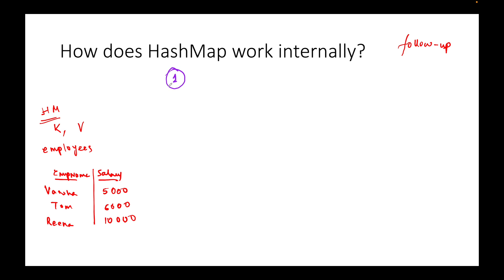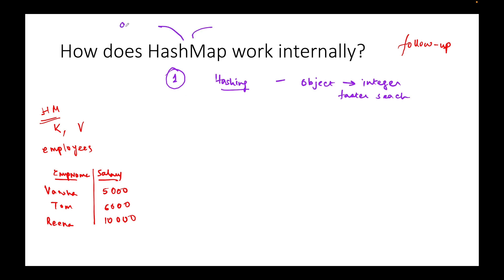I also have a PPT slide with all the information organized, but let's try to understand one by one. The first concept we have to understand is hashing — what is hashing? It is a way to convert an object into its equivalent integer value. We need this for faster lookups or faster search. HashMap is part of the Java collection framework and it uses this technique of hashing. Two important data structures which HashMap is made up of are array and linked list.